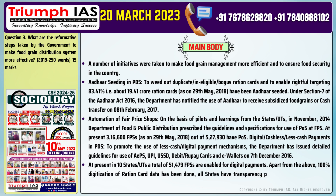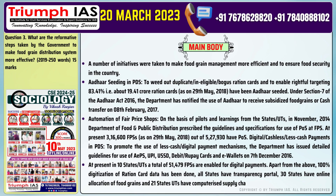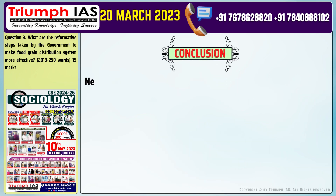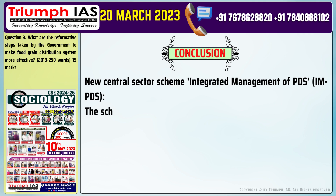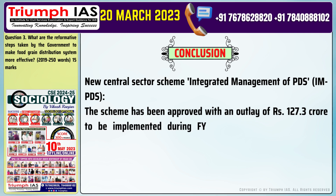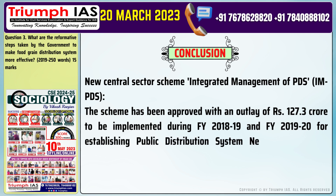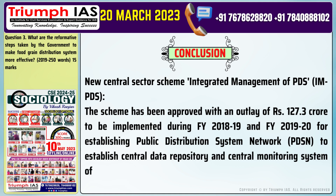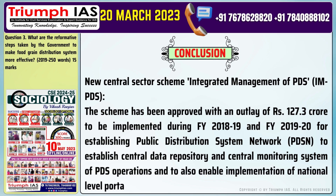Apart from the above, 100% digitization of ration card data has been done, all states have a transparency portal, 30 states have online allocation of food grains, and 21 states and UTs have a computerized supply chain management system. In conclusion, the new central sector scheme — Integrated Management of PDS (IMPDS) — has been approved with an outlay of Rs. 127.3 crore for FY 2018-19 and FY 2019-20, for establishing a PDS network, a central data repository, a central monitoring system of PDS operations, and to enable implementation of national-level portability.